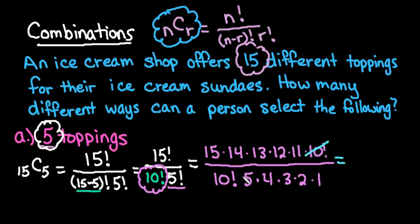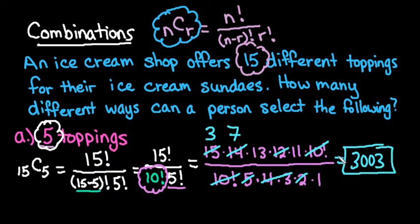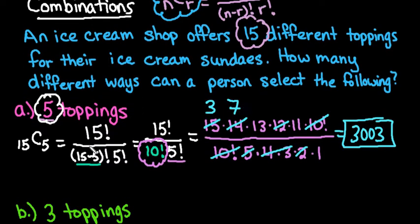When we simplify, 10 factorial reduces. 5 goes into 15 three times, 4 times 3 gives me 12, so this would cancel, and 14 divided by 2 is 7. What we have now is a lot easier to plug into our calculator if we don't have the factorial or the nCr button. We would just multiply 3 times 7, so 21 times 13 times 11, and you end up with 3,003 different combinations of 15 toppings taken 5 at a time.